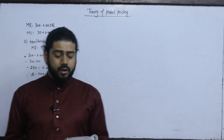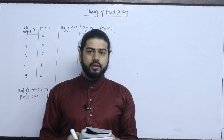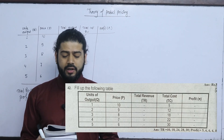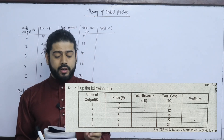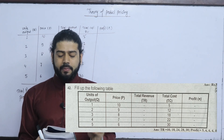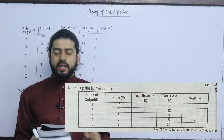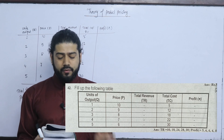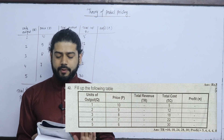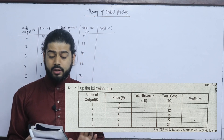Now let's go solve the next question. Let's take a fill-out of the table: output 1, 2, 3, 4, 5; price 10, 9, 8, 7, 6; total revenue column; total cost provided: 5, 12, 18, 22, 30.